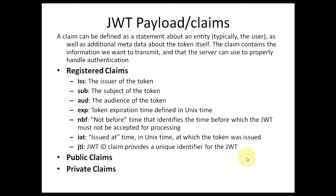There is a set of registered claims — ISS, SUB, AUD, EXP, NBF, IAT, and JTI — which provide metadata about the JWT token itself. ISS means the issuer of the token — who is issuing the JWT, such as Google or Facebook. SUB is the subject of the token — to whom it is issued, such as 100bytes.com or some other website.